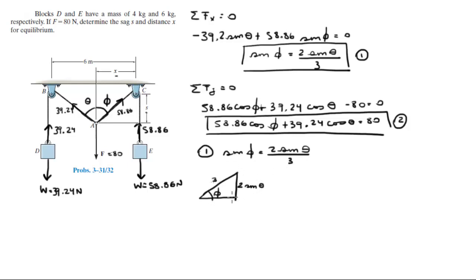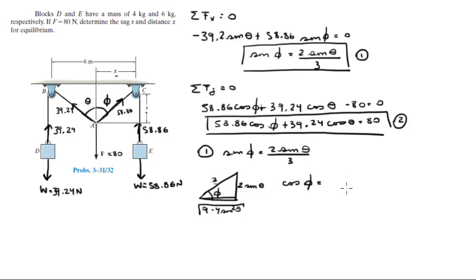In the imaginary triangle, sine of phi equals opposite over hypotenuse equals 2 sine of theta over 3, so the opposite side is 2 sine of theta and the hypotenuse is 3. By the Pythagorean theorem, the remaining side equals the square root of 9 minus 4 sine squared of theta. So cosine of phi equals the square root of (9 minus 4 sin²θ) all over 3.